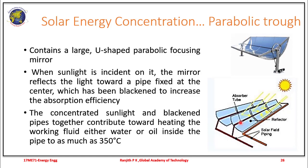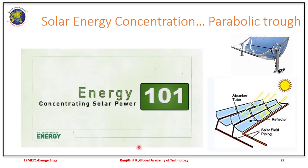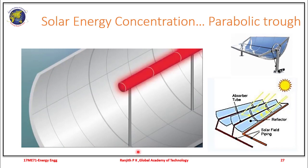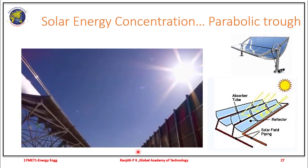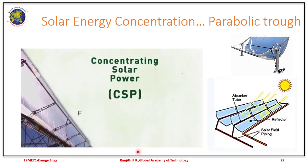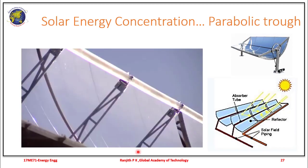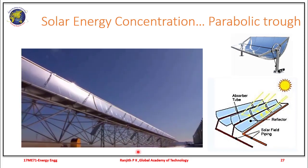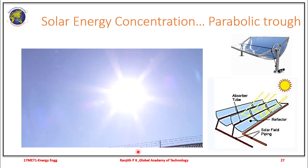The parabolic trough contains a large U-shaped parabolic focusing mirror. When sunlight is incident on it, the mirror reflects the light towards a pipe fixed at the focal point. This pipe is coated black to increase absorption efficiency. The concentrated sunlight and the black pipe together heat the working fluid within the pipe, usually water or oil. A typical temperature achieved is about 300 to 350 degrees Celsius. Parabolic troughs are large mirrors shaped like a giant U, connected together in long lines and tracking the sun throughout the day.